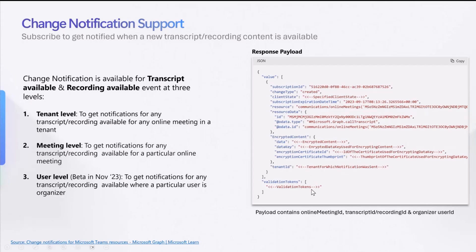Not going into all the details, but from the payload you'll be able to find the online meeting ID, the transcript ID, the recording ID, and the organizer ID. You would need these IDs to then go ahead and call the APIs that fetch the actual recording or the transcript content.